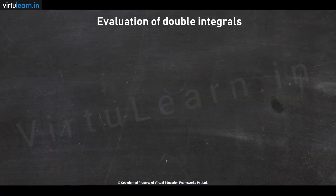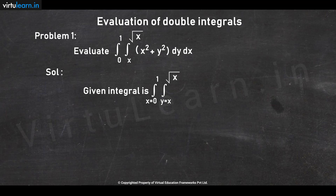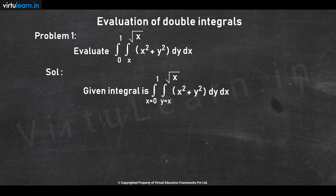Let us discuss a few problems on evaluation of double integrals. First, evaluate the integral: x from 0 to 1, y from x to √x, of (x² + y²) dy dx. Here y has variable limits, so we perform integration with respect to y initially, substitute the limits, and later integrate with respect to x.